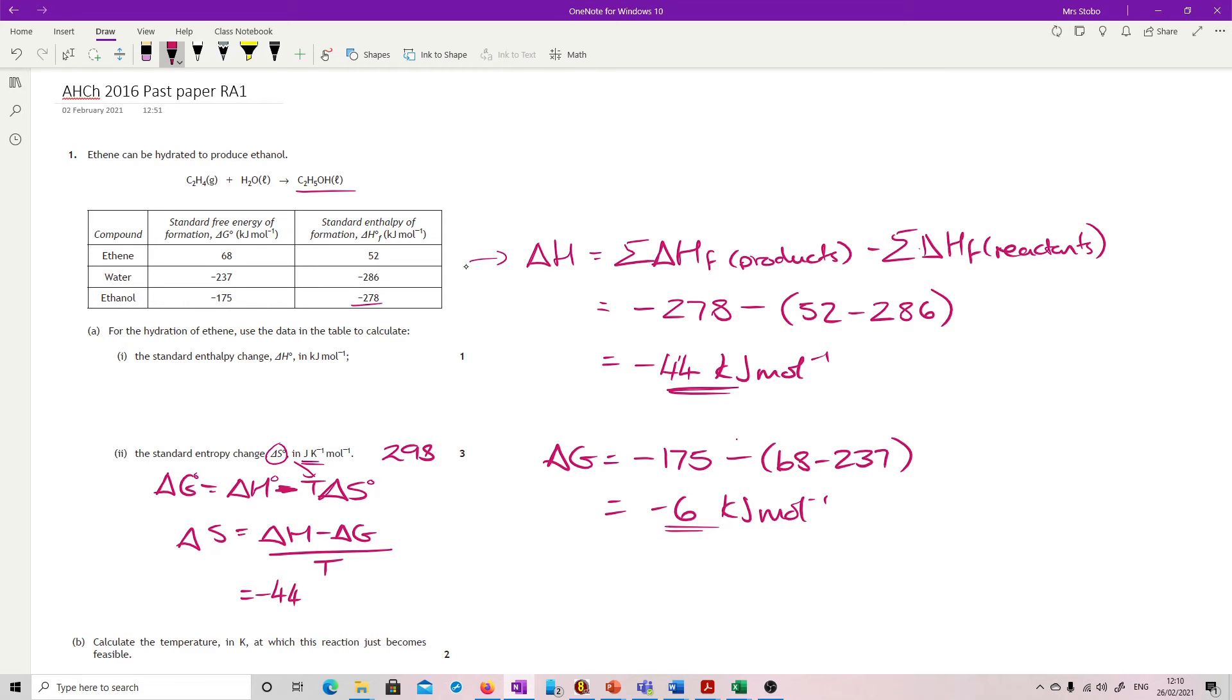So we'll plug this in to get the answer though. So we're just plugging in minus 44 minus minus 6, so plus 6, divided by 298K, obviously the temperature, is going to give us minus 0.1275. Now that's in kilojoules. I want to shift that into joules. So I'm going to times that by 1,000.